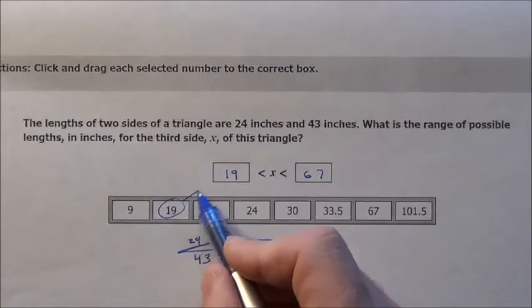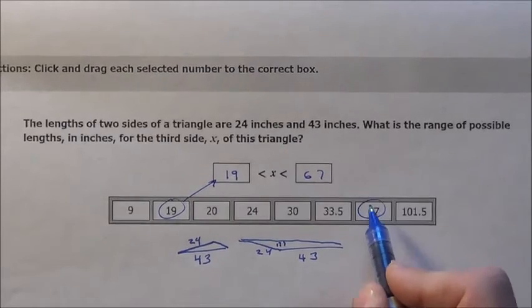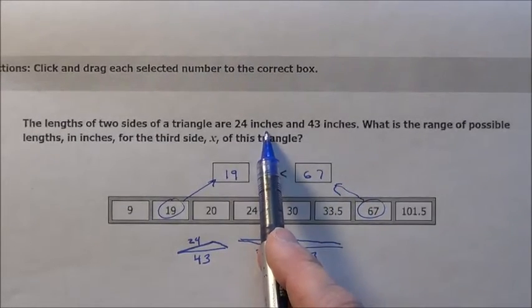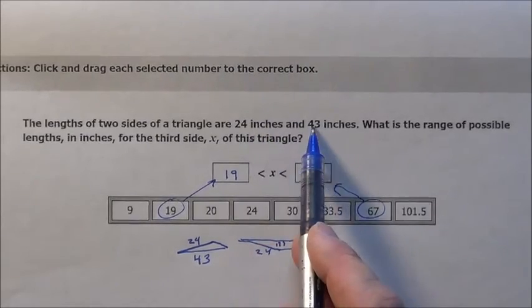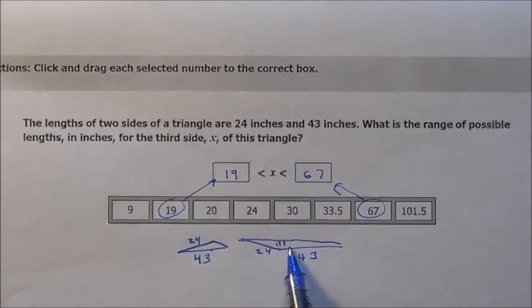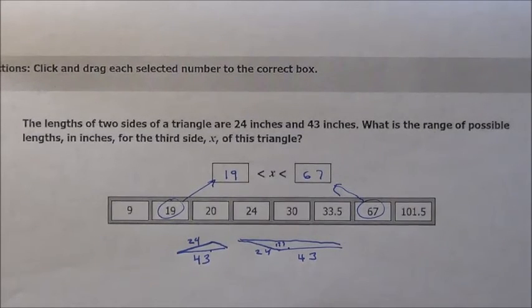So we would drag this 19 into the block and we would drag 67 into the block. Common problem, always occurs on the SOL. You just got to know, I got to subtract them because the triangle would look like that. Add them, it would look like that. So pretty easy to do.